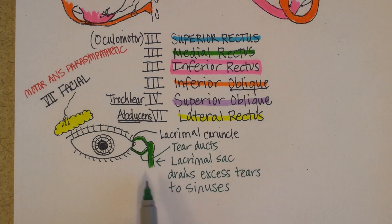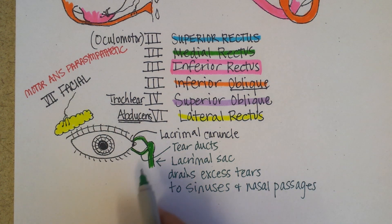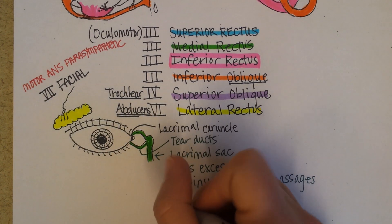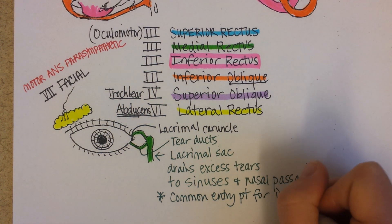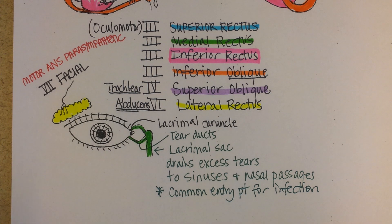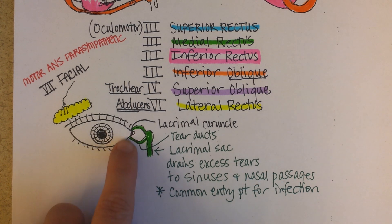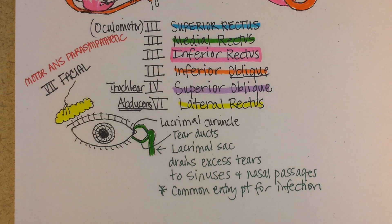Now interestingly, because the sinuses and nasal passages are connected to the eye, this is a common entry point for infection. If the flu is going around, it's unlikely that getting flu virus on your hands and sticking them in your mouth will give you the flu, compared to the risk of getting the flu virus on your fingers and rubbing your eye — because it will go directly to your nasal passages. The flu is a respiratory infection, and the flu virus is not as adapted for living in the mucosal membranes of your mouth.